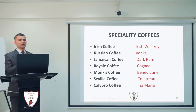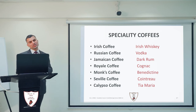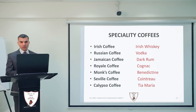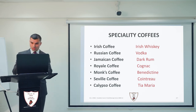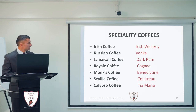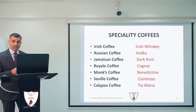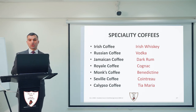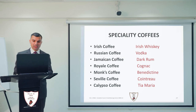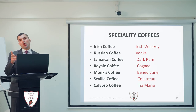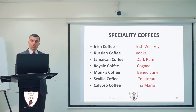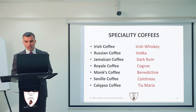Let's see some specialty coffees around the world. Specialty coffees are coffees that contain some spirit or liquor in them. We have Irish coffee, made with Irish whiskey, coffee decoction, and cream on top. Russian coffee has a base of vodka. Jamaican coffee is made from dark rum. Café Royal or Royal coffee uses cognac. Monks coffee has Benedictine, which is a very famous liqueur. Seville coffee contains Cointreau, a liqueur with an orange flavor. And Calypso coffee has a base of Tia Maria, which is a coffee-flavored liqueur.